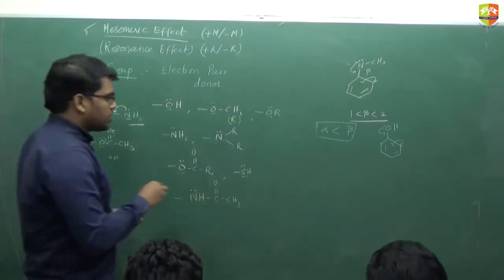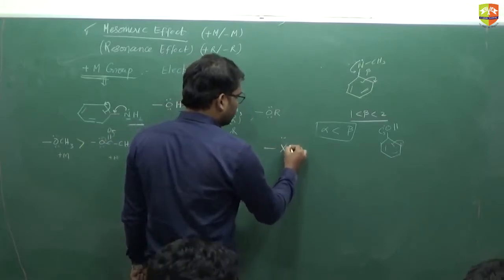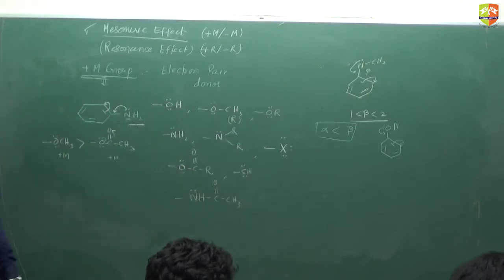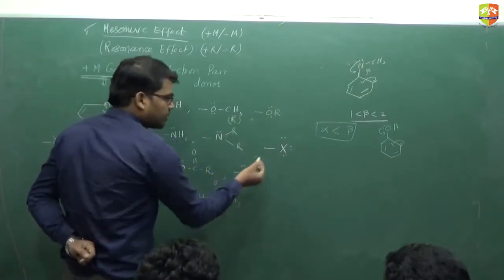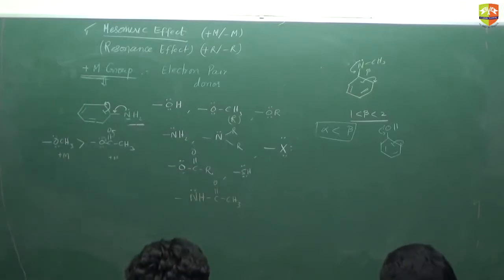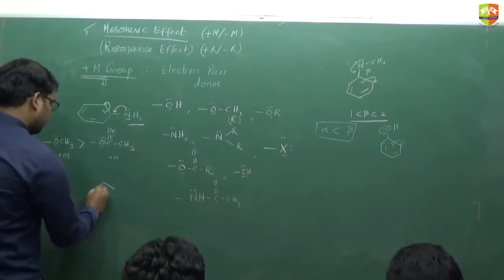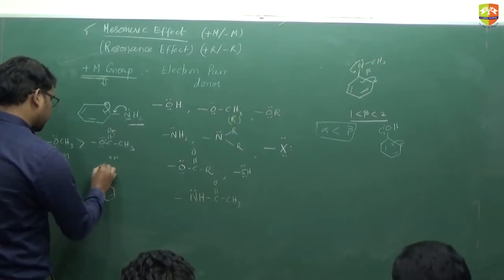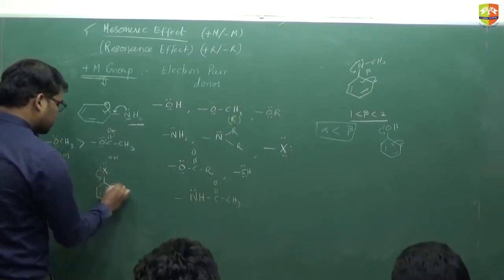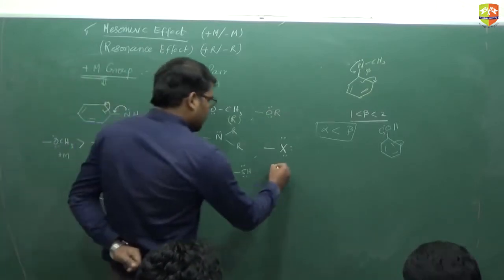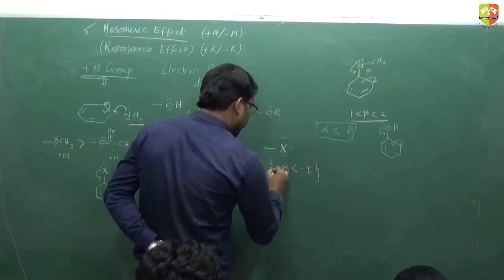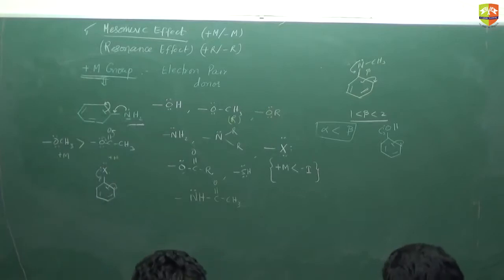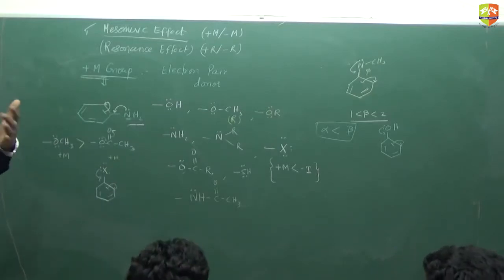What about halogens? Halogen (X) has three lone pairs. Does it show plus M effect? Yes — the condition for plus M is met since it has lone pairs. When halogen attaches to the ring, it can show resonance and donate electrons — so it has plus M nature. However, halogen also has a strong minus I effect, and its effective overall effect is minus I.